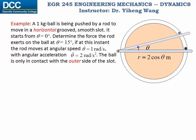Let's look at this example. There's a 1 kg ball being pushed by a rod to move in a horizontal grooved smooth slot. Horizontal indicates that we do not need to consider the weight, and smooth slot indicates that we do not need to consider friction. It starts from when theta equals 0 degrees, and we need to determine the force the rod exerts on the ball at theta equals 15 degrees, if at this instant the rod moves at an angular speed of 1 radian per second and an angular acceleration of 2 radians per second squared. The ball is only in contact with the outer side of the slot.